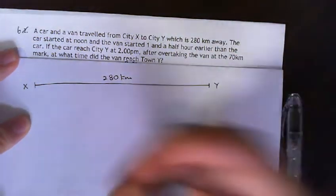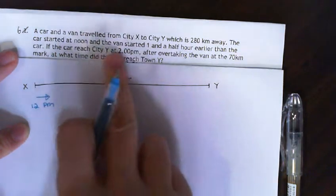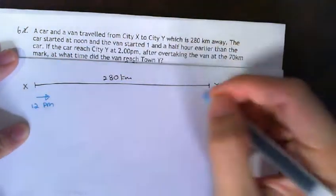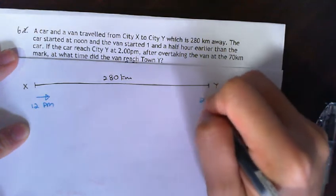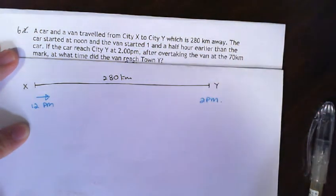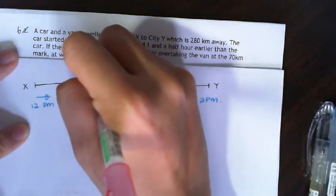The car started at 12 noon, and the van started one and a half hours earlier than the car. If the car reached City Y at 2 p.m. after overtaking the van at the 70 km mark, so at this point, this 70 km mark here, it overtook the van.